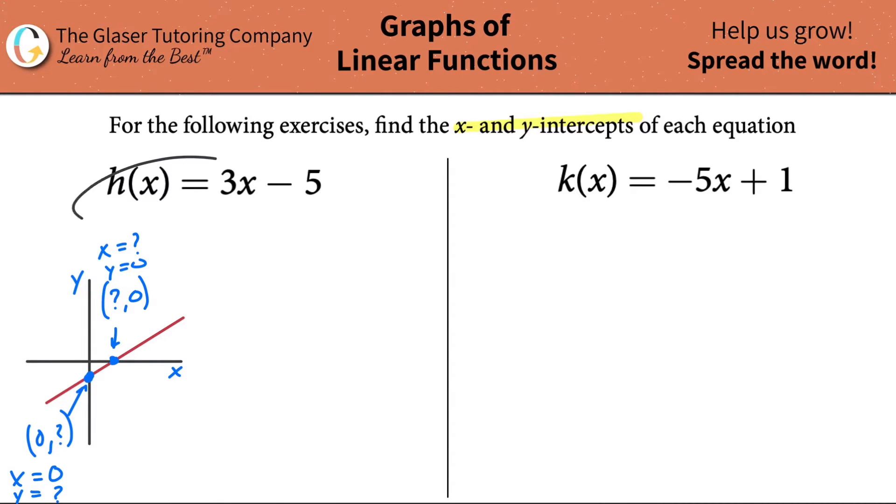Now, how can we take this equation and find the x and the y intercepts? Well, remember, you might be saying, well, where's y? Remember, h of x, that stands for a function. This represents a function of x. You can call that whatever you want. I'm going to call it y. Y is equal to three x minus five.